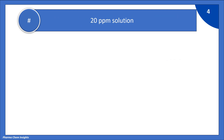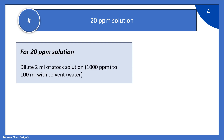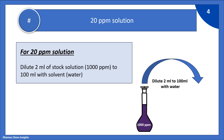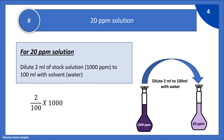Now let us see how to prepare 20 ppm solution. For 20 ppm solution, dilute 2 ml of 1000 ppm stock solution to 100 ml with water — that will give you 20 ppm solution. Calculation: 2 ml of stock divided by 100 ml, multiplied by 1000, gives 20 ppm.